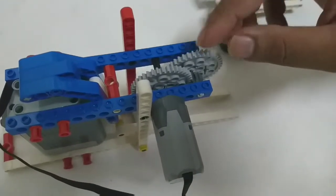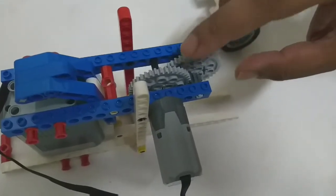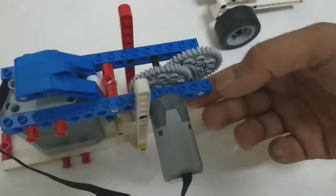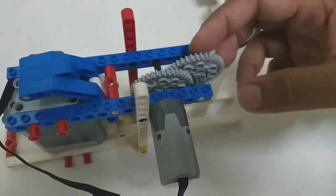There are two types of gears connected here. Number one, the light gray color, is called the 40-tooth gear, and this smaller one is the 8-tooth gear.